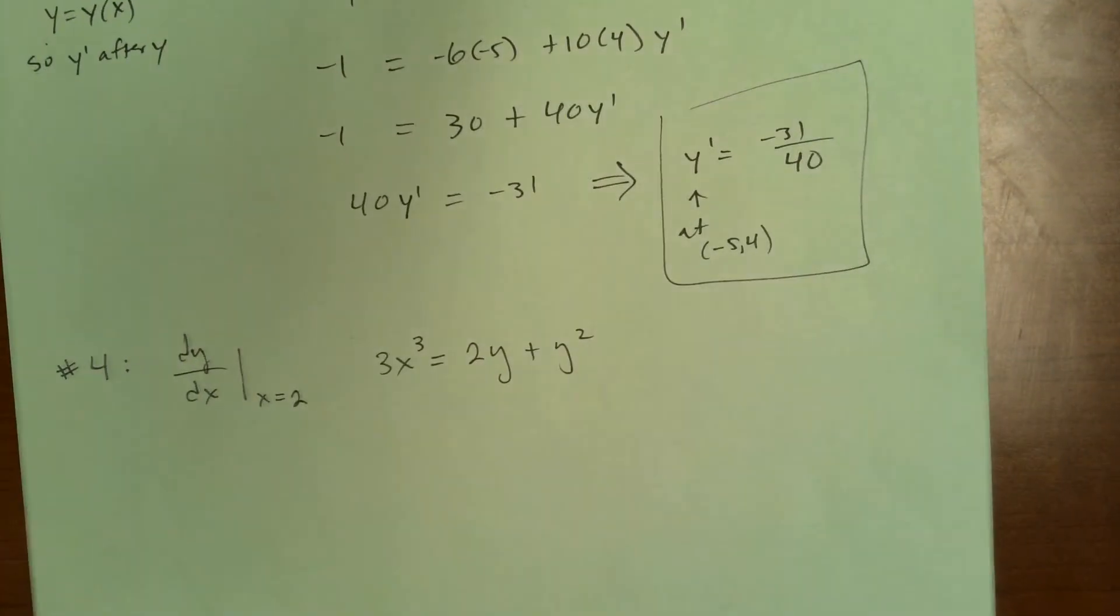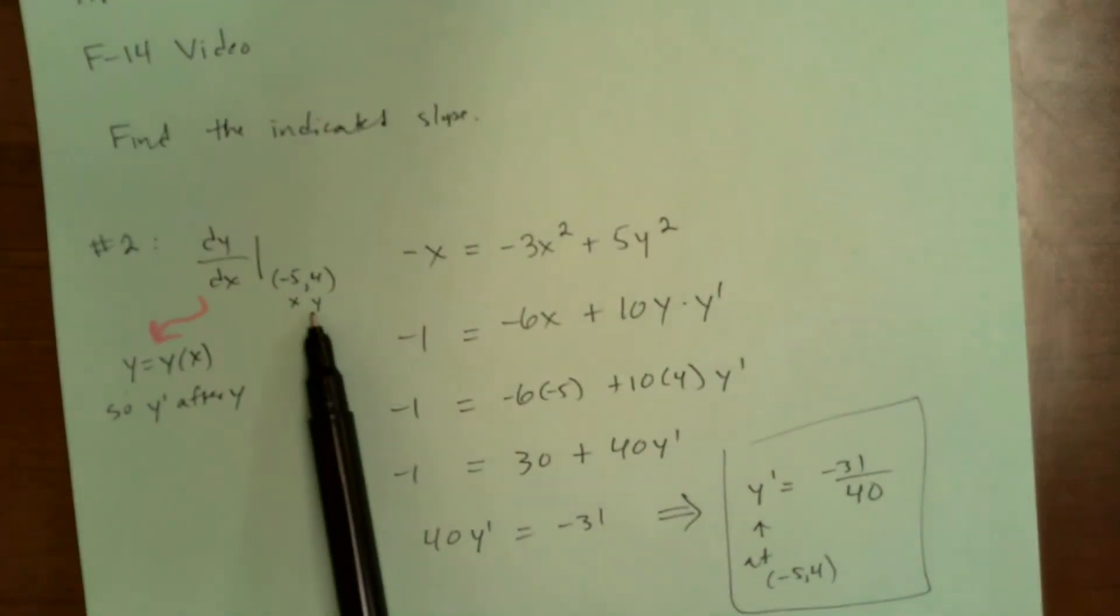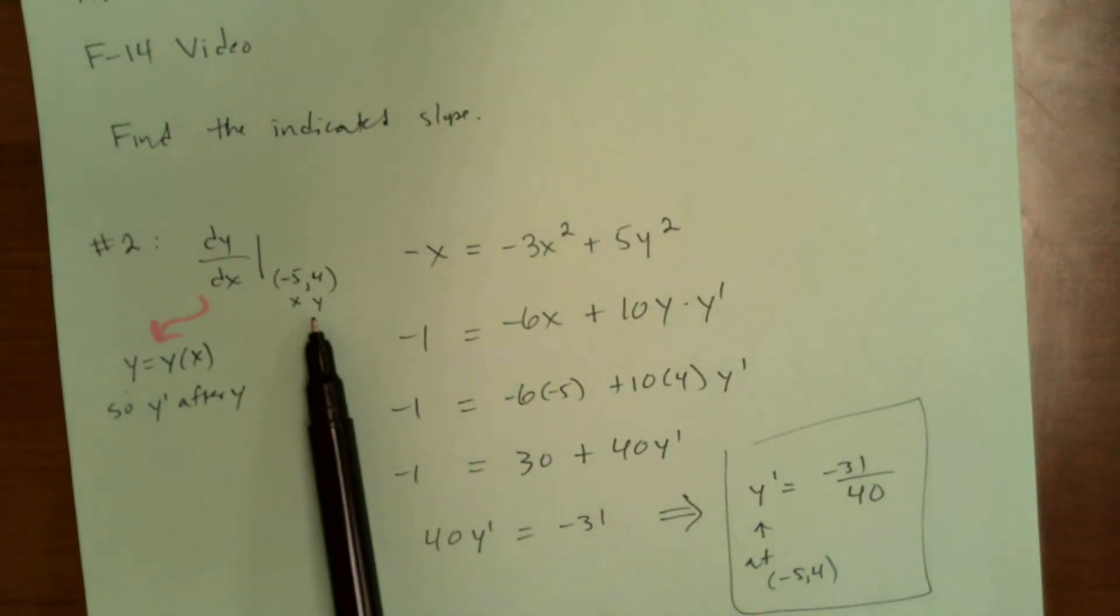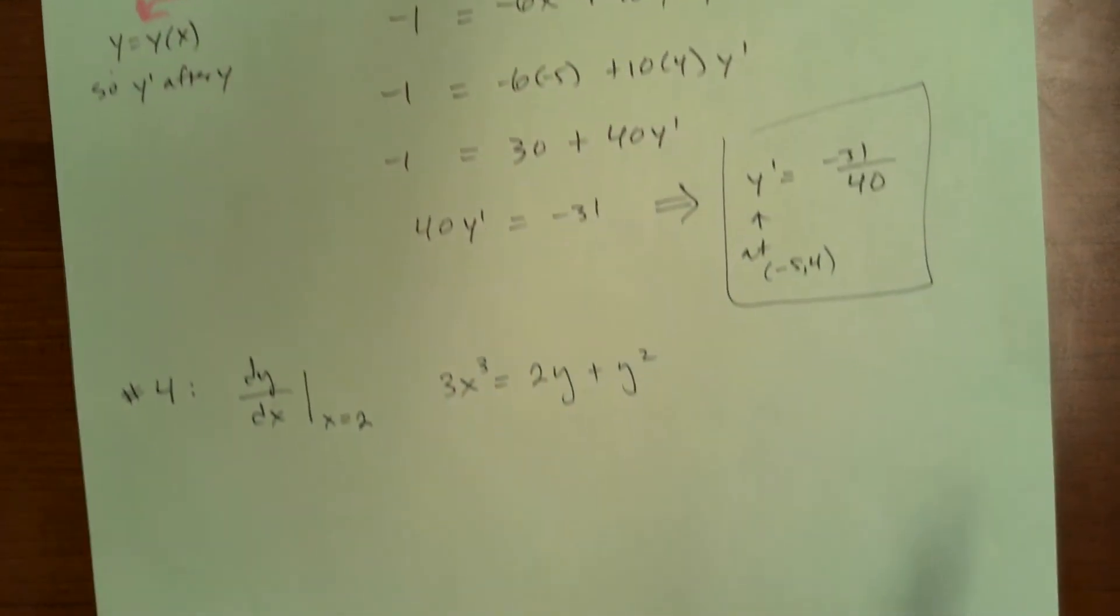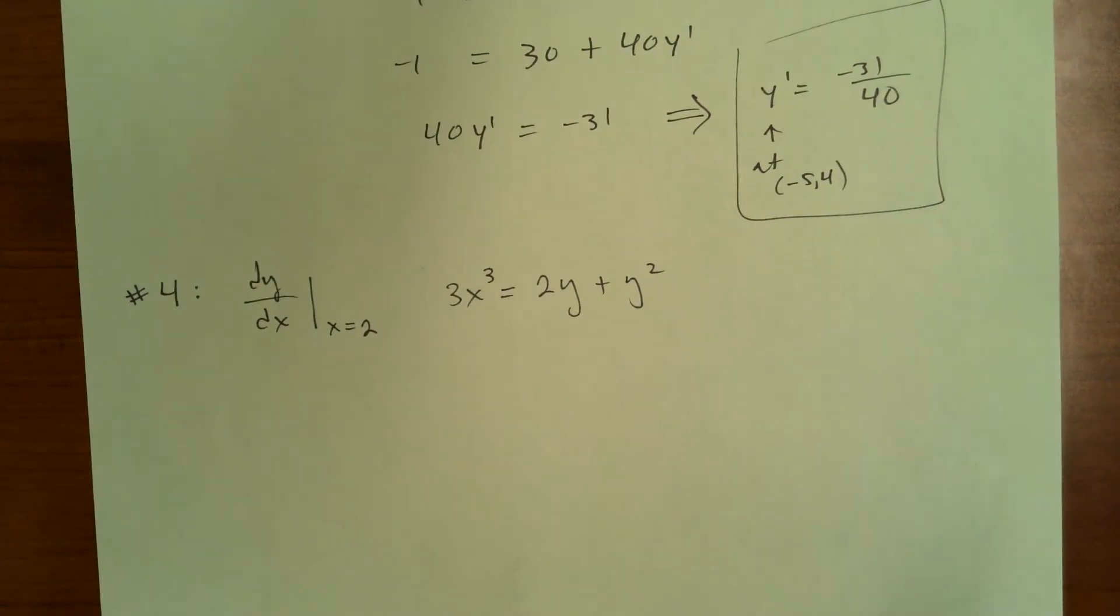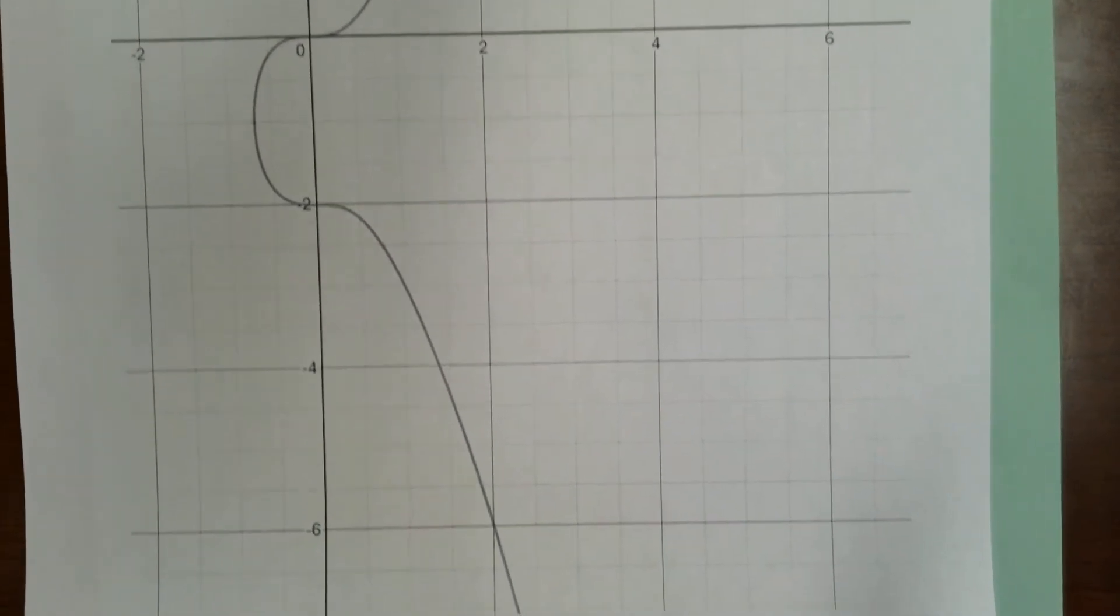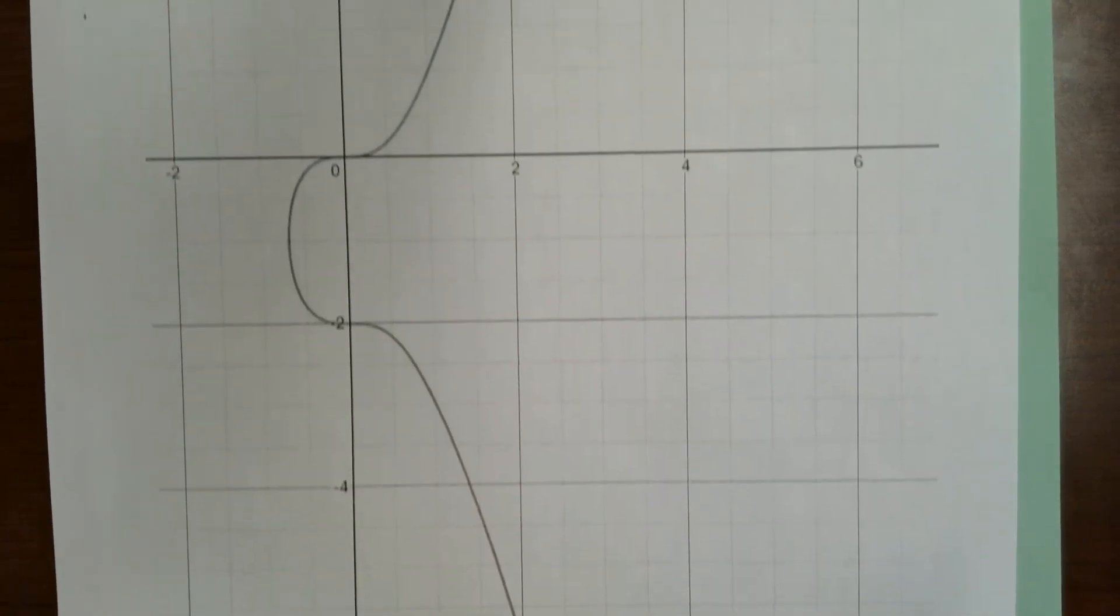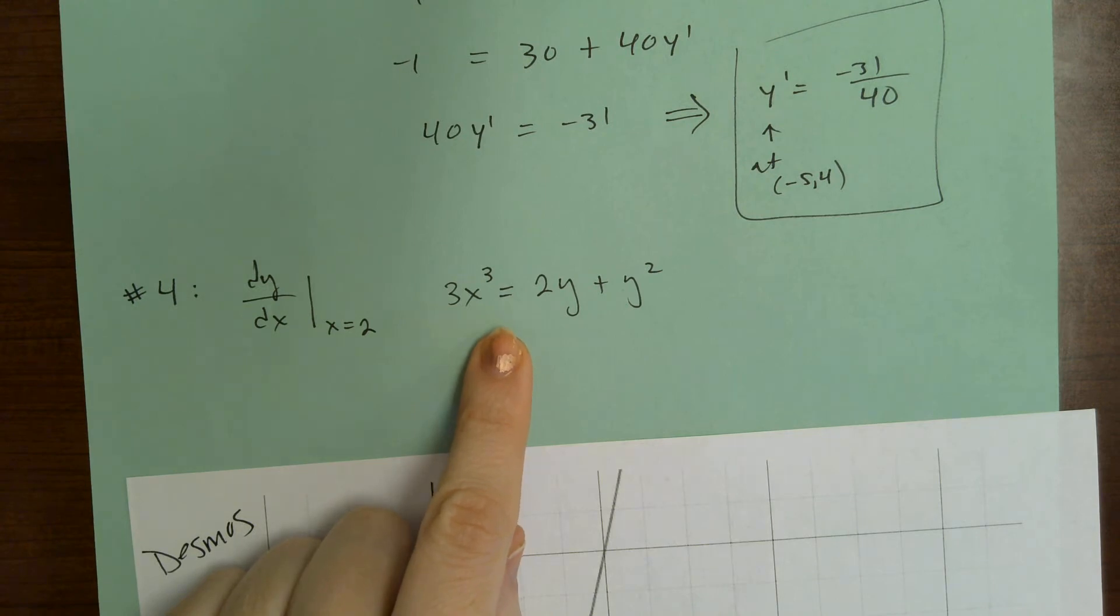So dy/dx. So we're finding dy/dx evaluated at x equals two. Now this one, they actually gave us a single, like an actual point, both coordinates, but now they're just giving us one of the coordinates. And here I use desmos again. This is the graph, kind of a neat looking graph.